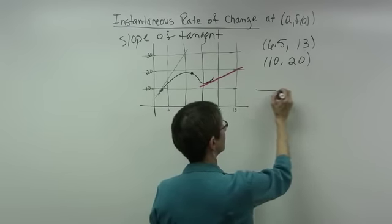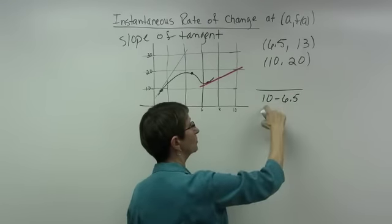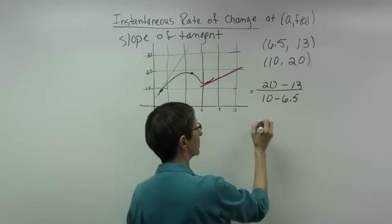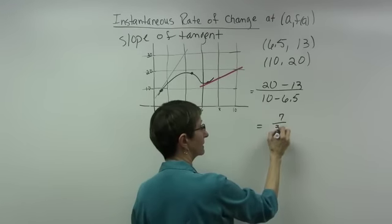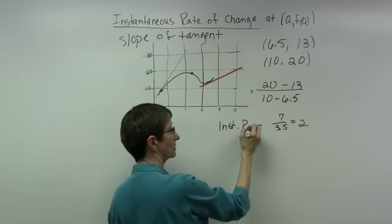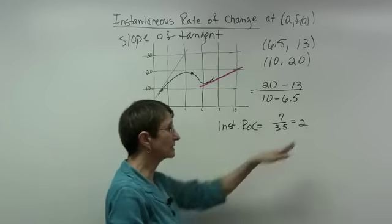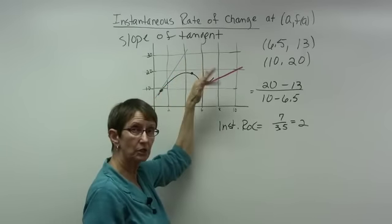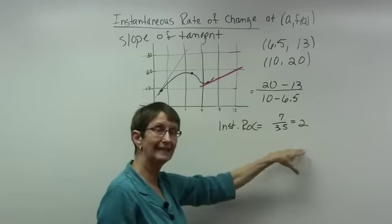Finding the slope: the denominator is 10 minus 6.5, and the numerator is 20 minus 13. That gives 7 over 3.5, which equals 2. So the instantaneous rate of change at the red tangent point is 2. This is an estimate — when you draw a tangent line, you must try carefully to make it touch at one point, and there will be a little wiggle room.